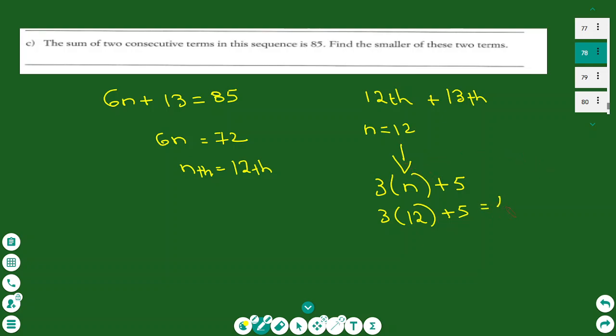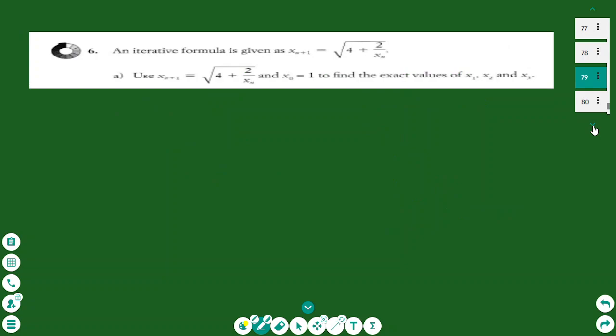The 13th term is 3 × 13 + 5, which we can verify. Now let's go to the iteration formula.